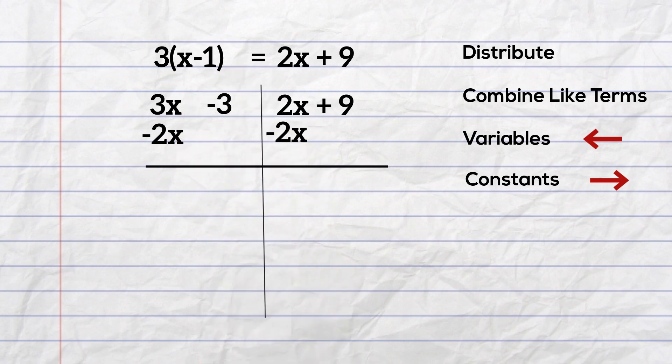When I complete that, 3x minus 2x equals x, I will bring down the negative 3, the 2x cancel each other out, and then I bring the positive 9 down.